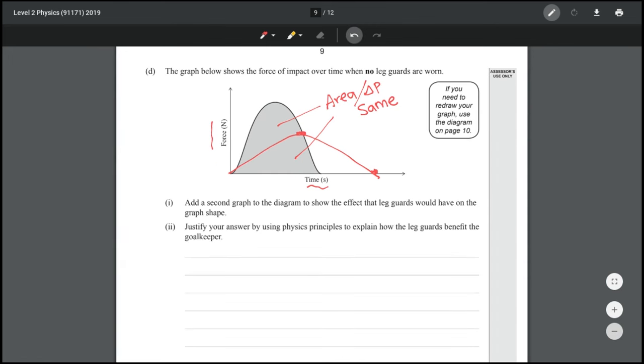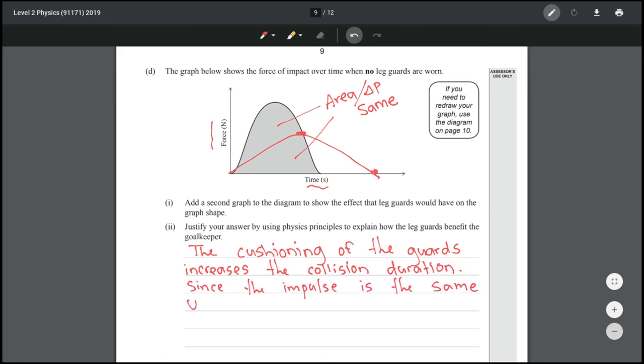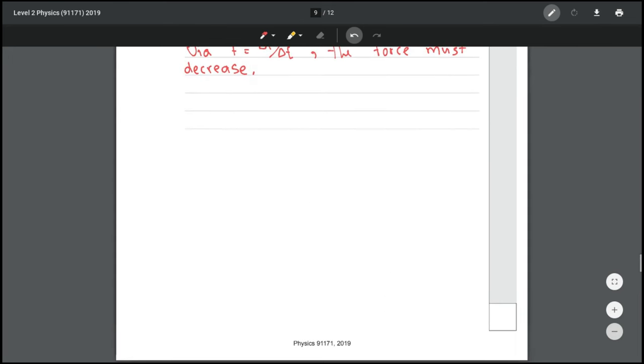Justify your answer by using physics principles to explain how the leg guards benefit the goalkeeper. The cushioning of the guards increases the collision duration. Since the impulse is the same via force equals change in impulse over change in time, the force must decrease. And that's it.